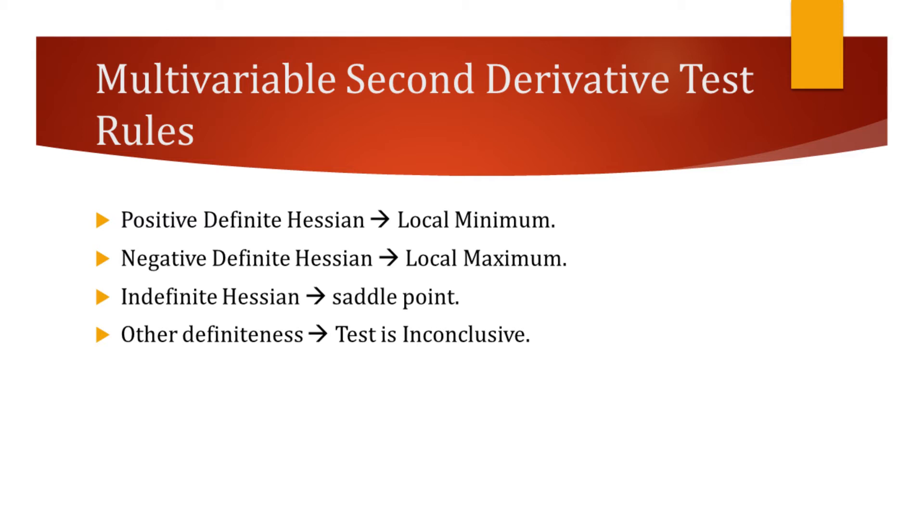In case we have at least one positive eigenvalue and at least one negative eigenvalue, the Hessian is said to be indefinite. In such a case, the critical point can be concluded to be a saddle point.